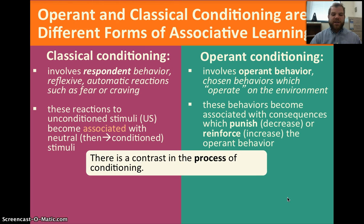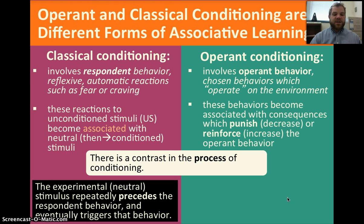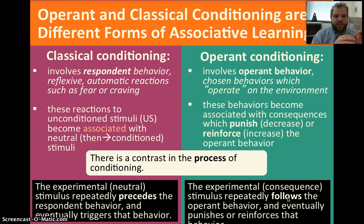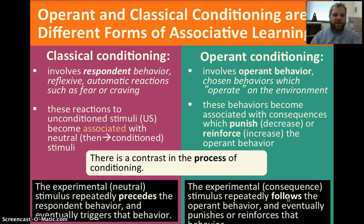There's a contrast in the process of conditioning. In classical conditioning, the neutral stimulus repeatedly precedes the respondent behavior and eventually triggers that behavior — it happens beforehand. Whereas in operant conditioning, the consequence stimulus repeatedly follows the operant behavior and eventually punishes or reinforces it. So in classical conditioning, something happens before the desired behavior, such as the bell rung with the food; in operant conditioning, the reward or punishment follows after the behavior.